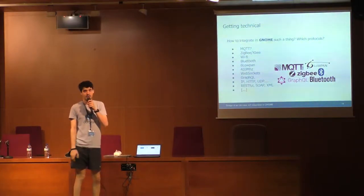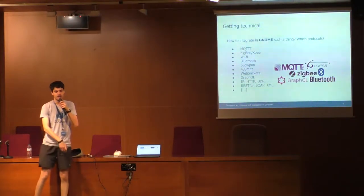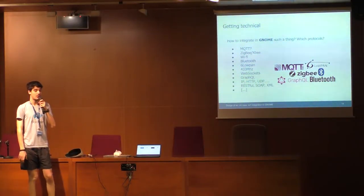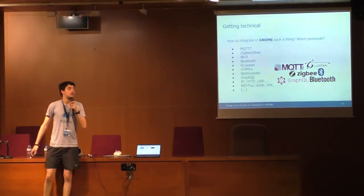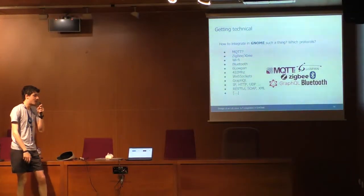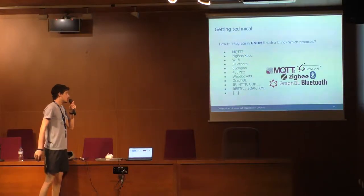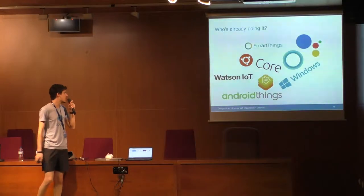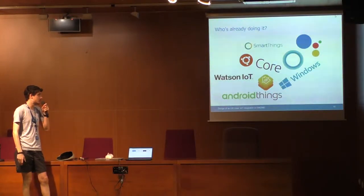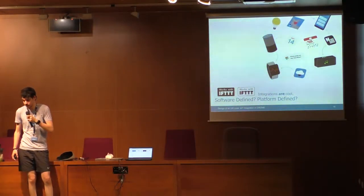Maybe everyone here already knows about Philips Hue - the smart lamps you can control with voice, because they're integrated with Alexa, Google Home, and many others, or with their own app. You can even create your own application because they have a developer reference, since Philips Hue uses the ZigBee protocol - not like Apple, which puts a lot of proprietary stuff on top of Bluetooth. And what are other companies doing? Samsung, Apple, IBM, Canonical, Google, and even Android - a lot of companies and projects are literally doing IoT.